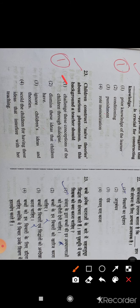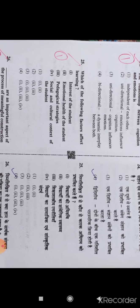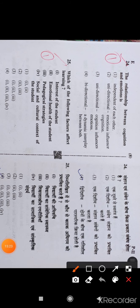Question number 24: The relationship between cognition and emotion is bi-directional or dynamic interplay between both. There is a dynamic reciprocal interaction between both. Option 4 is right.